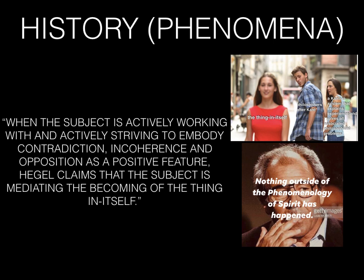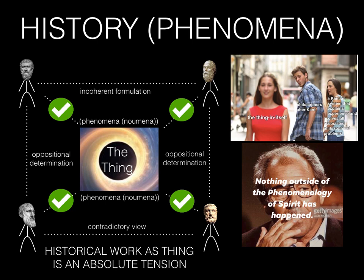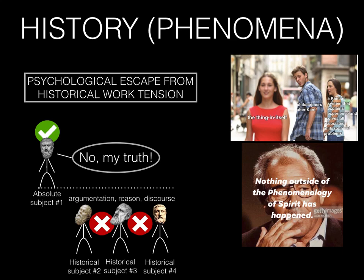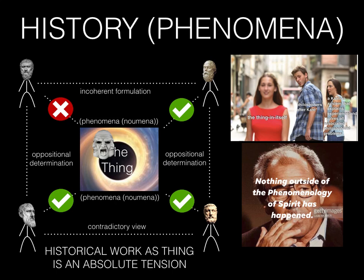This point is so important that it is worth spelling out and repeating. When the subject is actively working with and actively striving to embody contradiction, incoherence, and opposition as a positive feature, Hegel claims that the subject is mediating the becoming of the thing in itself. As a result, the historical work of such activity is the thing in itself — not as a perfect absolute reality beyond or behind appearances, but as an absolute tension internal to our perceptions and internal to our discourse. From this philosophical understanding, we can come to a type of dialectical or psychological diagnosis of those subjects who claim to know the absolute truth. What these subjects are doing is in fact trying to psychologically escape from the historical work of tension — trying to not reach the absolute thing in itself, but actually block or distort their access to the thing in itself and participation with the other subjects who are all a part of the phenomenal spiritual history.